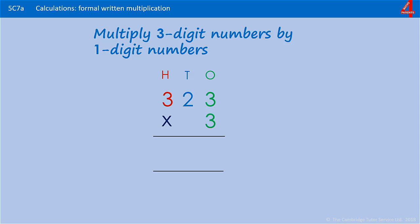We're going to start by multiplying a three-digit number by a one-digit number. We have 323 multiplied by 3, and I've indicated the ones in green, the tens in blue, and the hundreds in red, so it's easier to see what's happening as we're multiplying.